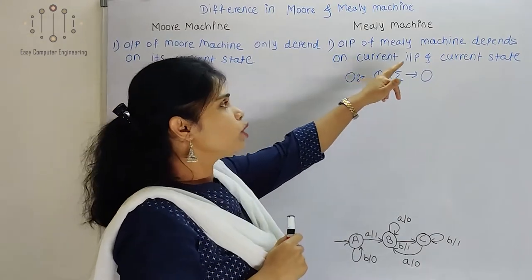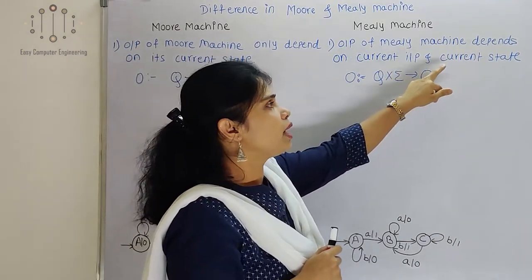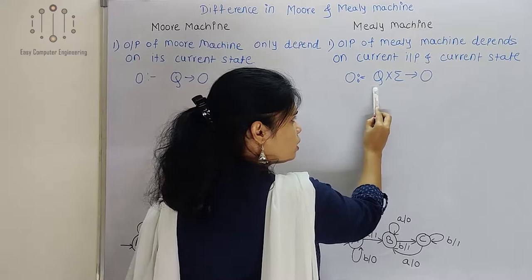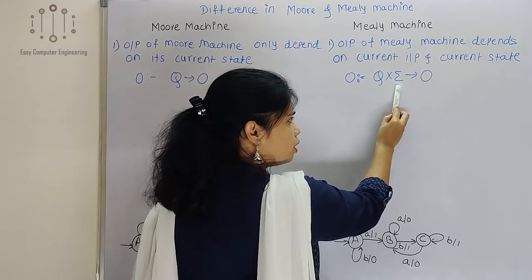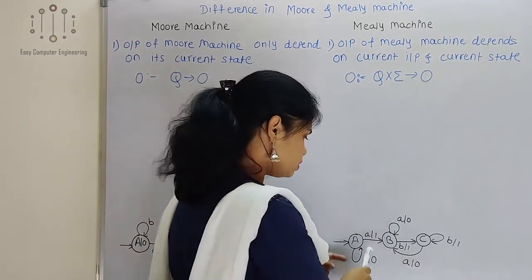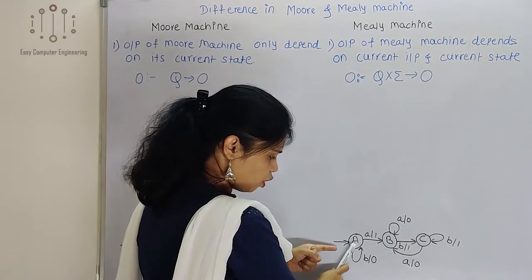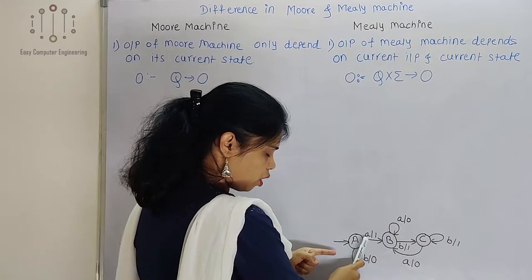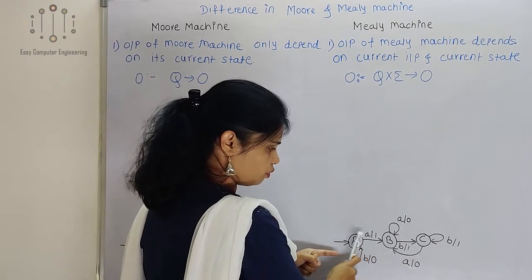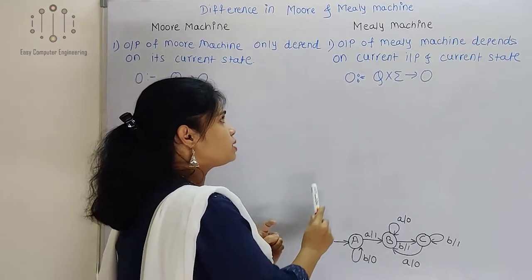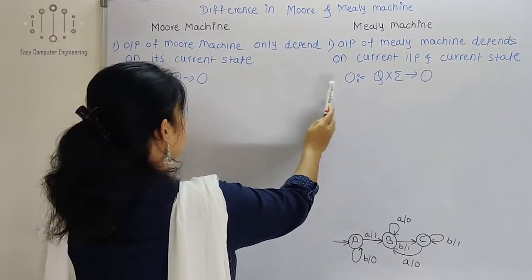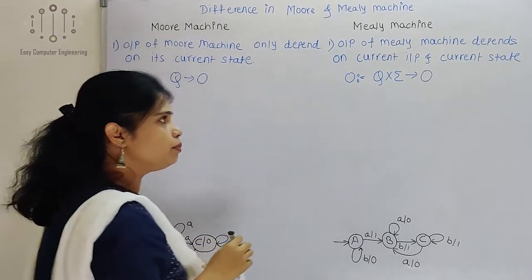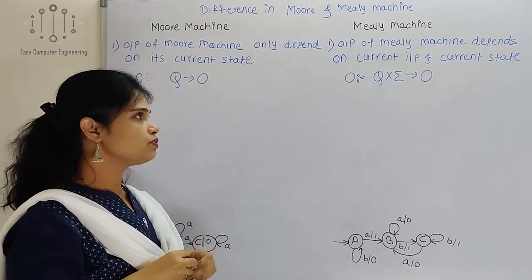But in Mealy machine, output depends on both current input as well as current state. That is, Q (current state) as well as sigma (current input) maps to output. For example, from state A on input B, I am getting output 0; from A on input A, I am getting output 1. So the output function O here depends on current state as well as current input. This is the first difference.